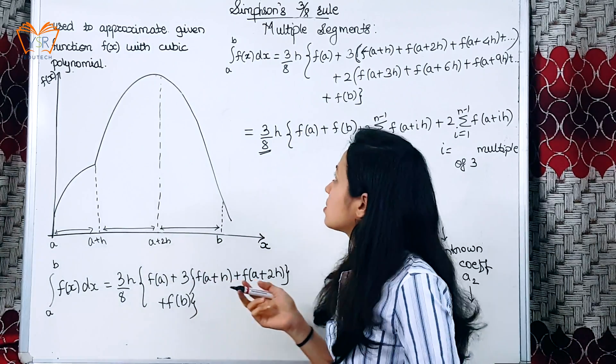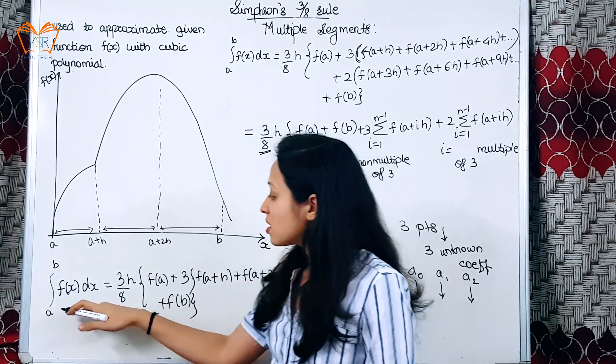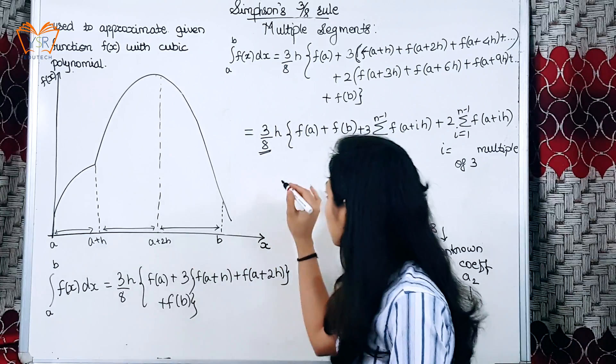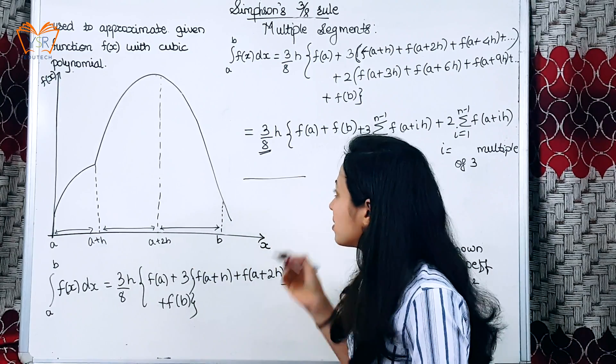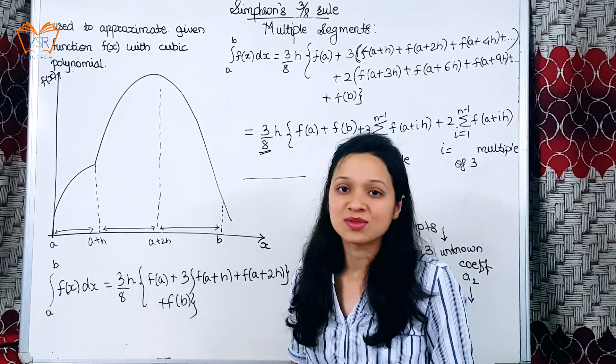So this is all about Simpson's 3/8 rule. If any examples are asked about this rule, simply keep in mind this formula and substitute the values. Thank you.